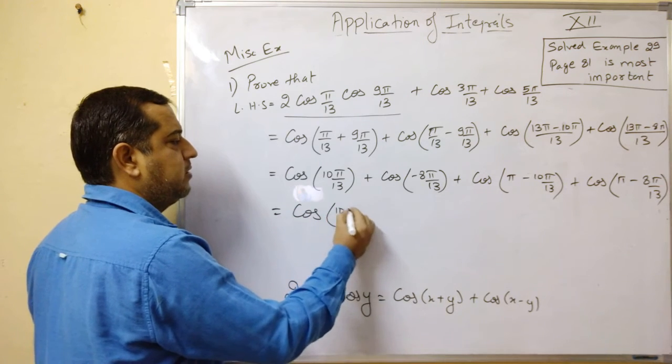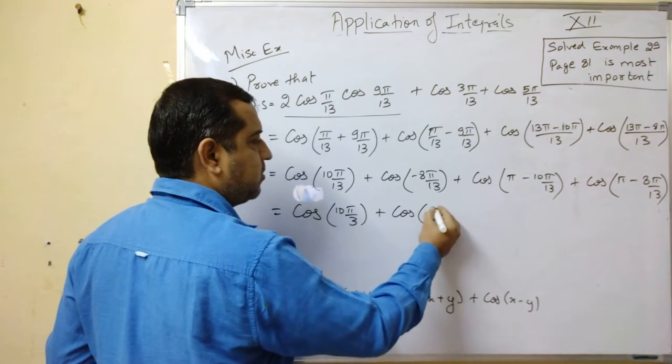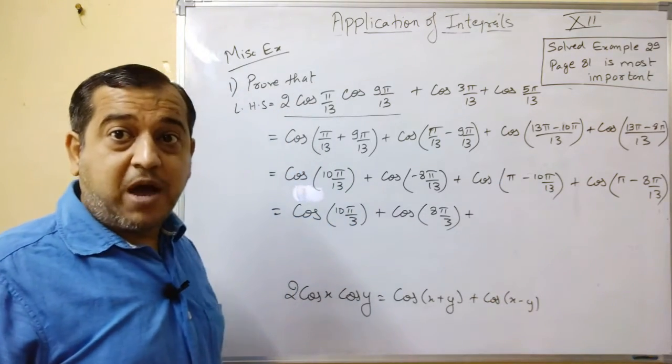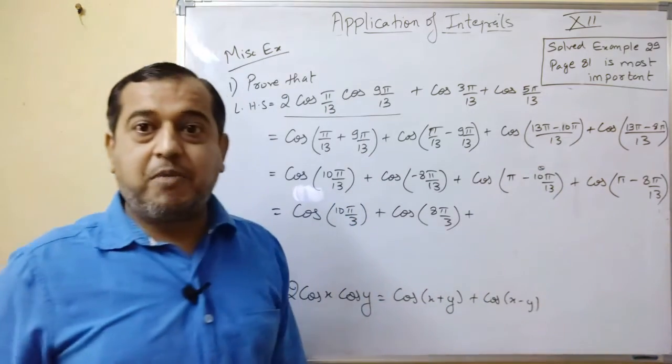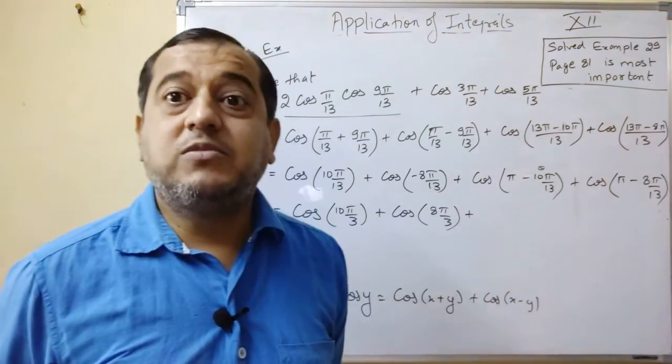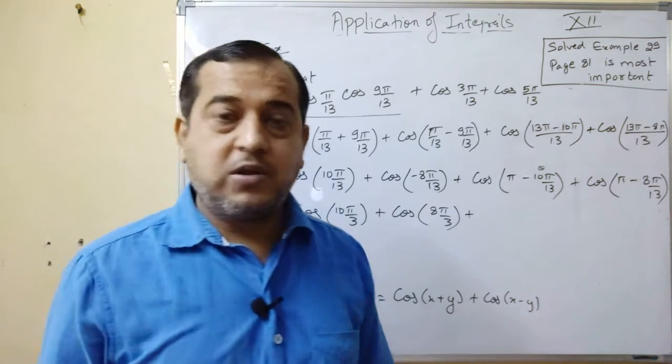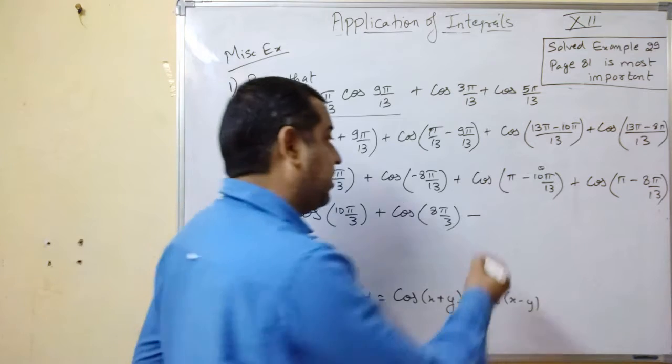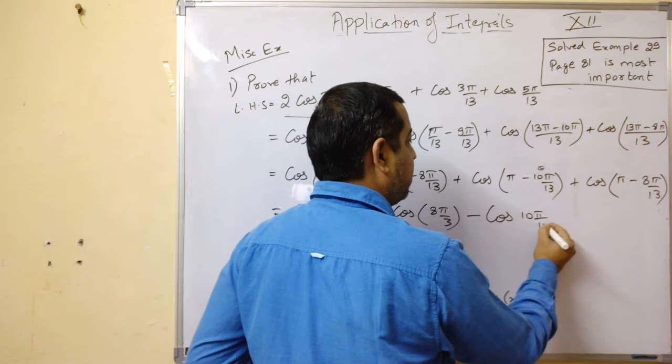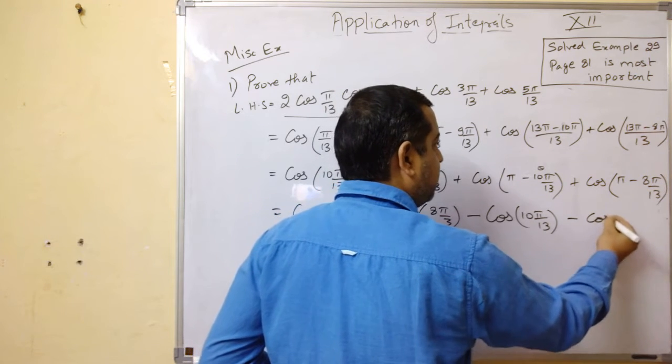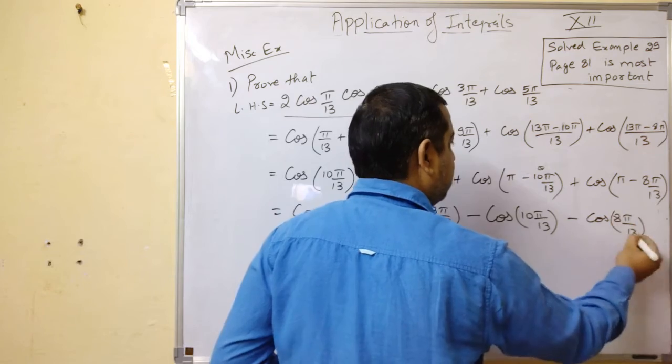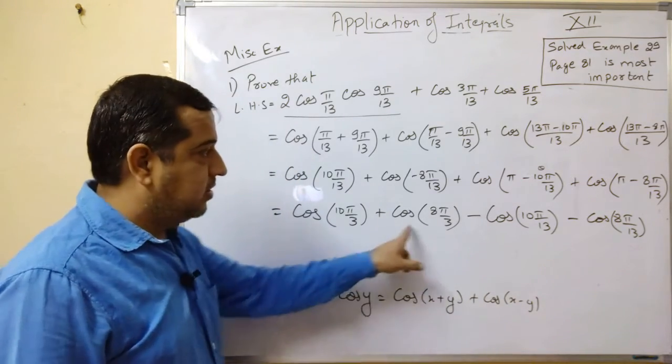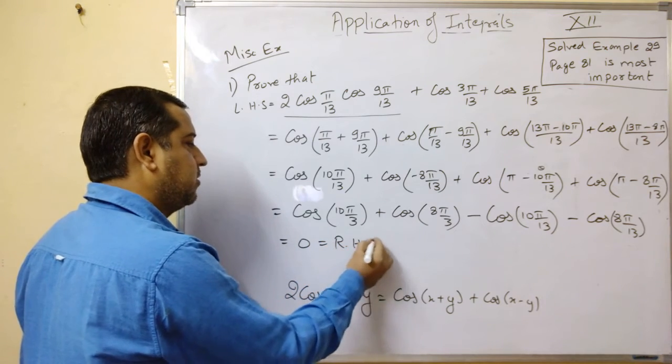This is cos(π/13). This is cos(π - θ). Now using cos(π - θ) identity, you get cos θ, which means cos(10π/13). Similarly, we are getting cos(π - θ). So your answer is 0. This is RHS.